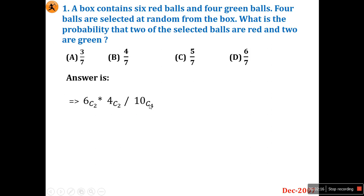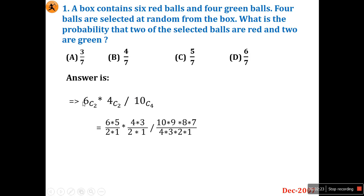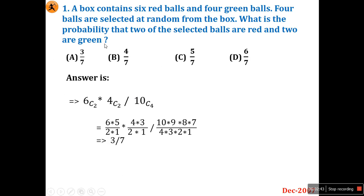Total is 10 balls, selecting 4, so denominator is 10C4. Simplifying: (6×5)/(2×1) × (4×3)/(2×1), divided by (10×9×8×7)/(4×3×2×1). The final answer is 3/7 — that is the probability of getting two red balls and two green balls.